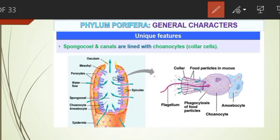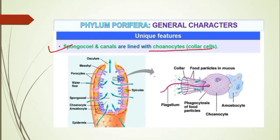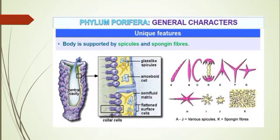The spongocoel and canals are lined by specialized cells called choanocytes, which help in maintaining constant flow of water from ostia to osculum. The spongocoel is the body cavity found in sponges.